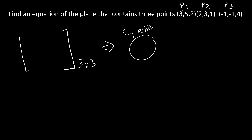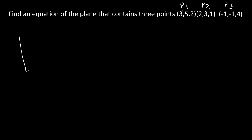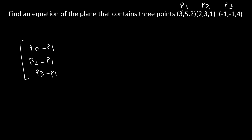The plan we're going to follow is: the first row of the determinant has to be the vector P0 minus P1, the second row has to be P2 minus P1, and the third row has to be P3 minus P1. The difference between these vectors will form the matrix, and then we can find the determinant to get the equation of a plane.